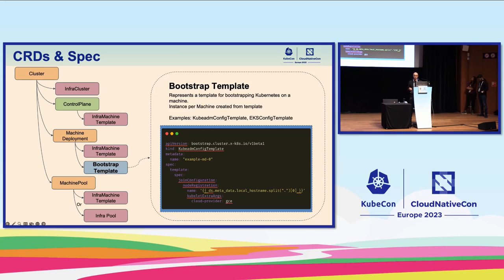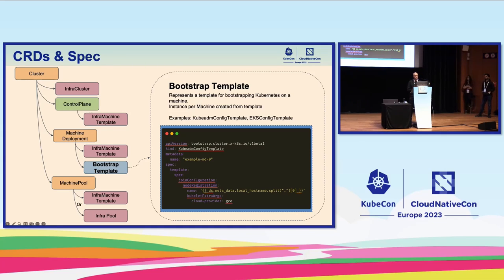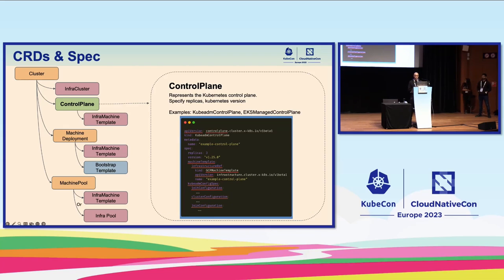A bootstrap provider defines resources that expose configuration options for bootstrapping Kubernetes on a machine. The template creates specific instances of the bootstrap configuration for control plane and worker machines. When reconciled, the bootstrap configuration results in a command or set of commands executed on a machine that will either create a new Kubernetes cluster or join the machine to an existing one. A control plane provider defines a control plane kind and is responsible for creating and managing the lifecycle of a Kubernetes control plane. Control planes and bootstrap providers often come in a pair — especially true of kubeadm.